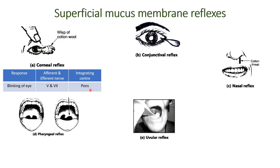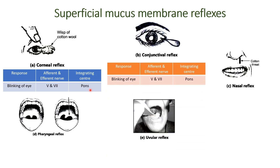The second reflex is the conjunctival reflex. We'll touch the conjunctiva with a cotton swab while the individual is looking at a far wall. The response is again the blinking of the eye. The afferent and efferent nerves involved are the fifth and seventh cranial nerves, and the integrating center is the pons.